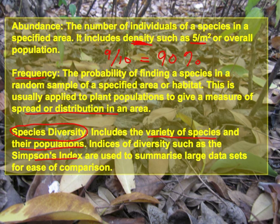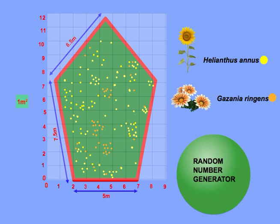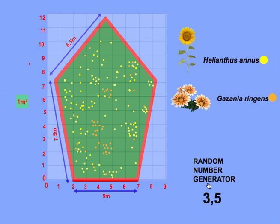Simpson's Index is a statistical combination of population and variation that represents species diversity in a concise manner. Now let's look at our actual sample plot. Our job is to take six samples within this plot of ornamental plants. The yellow dots represent Helianthus annuus, the sunflower, and the orange dots represent Gazania. We need to decide where each sample will be placed using a table of random numbers or an electronic random coordinate generator.